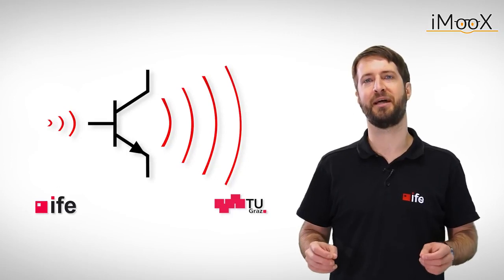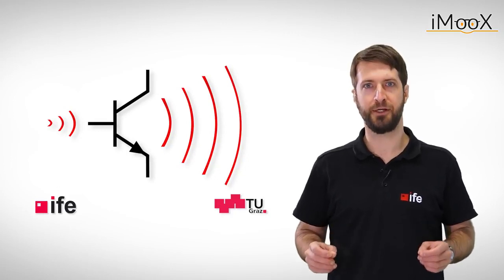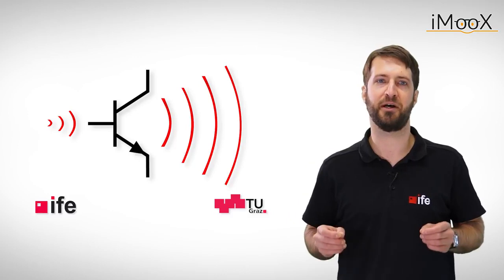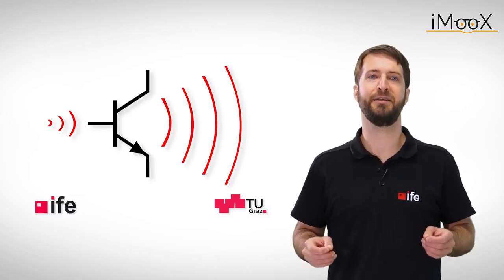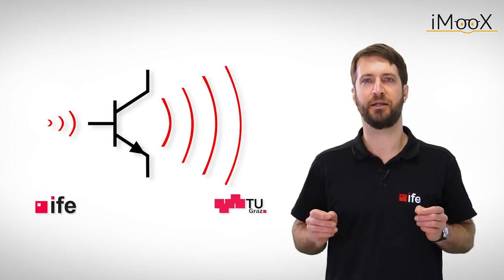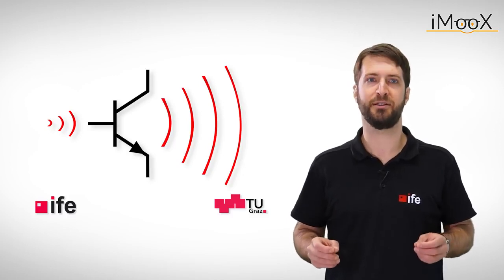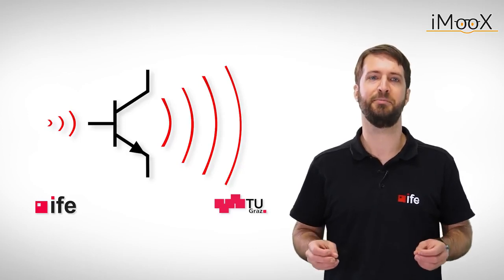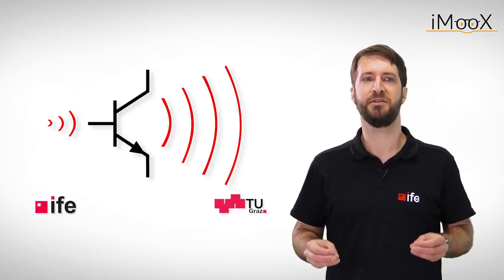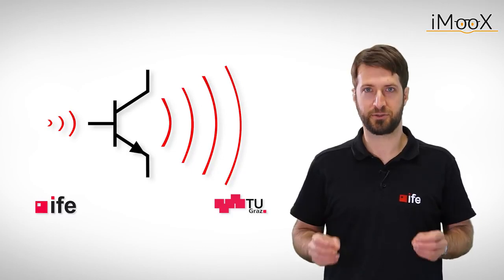This basic design example of an emitter follower should give you a first clue how transistor amplifiers work. The emitter follower can be used in a variety of different applications, like current sources, voltage regulators or in the output stage of class B or class AB amplifiers. You can find some example circuits in the description of the video.